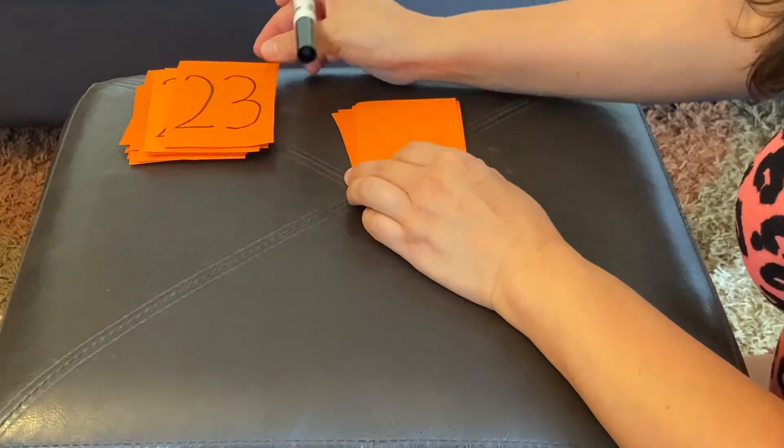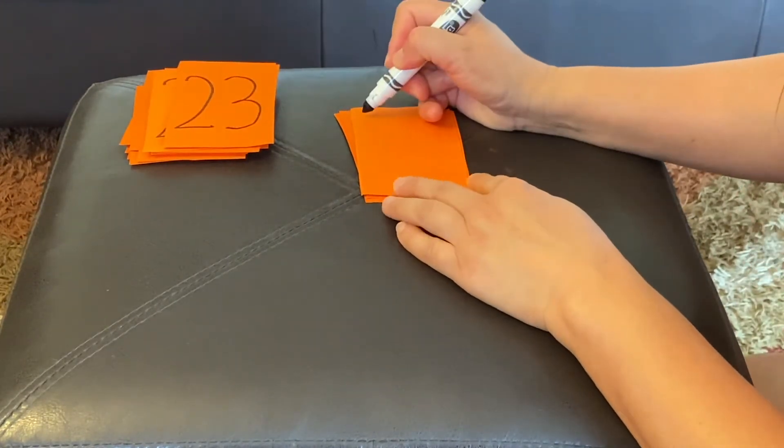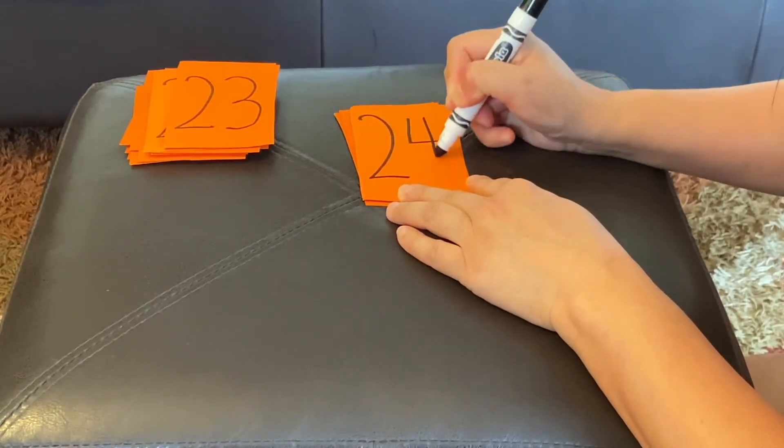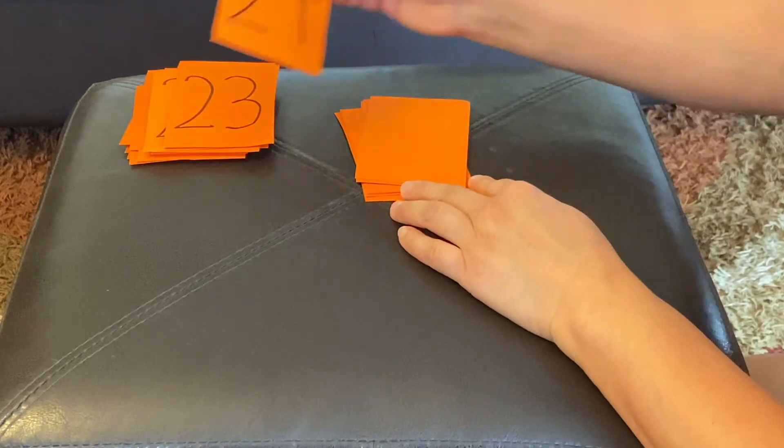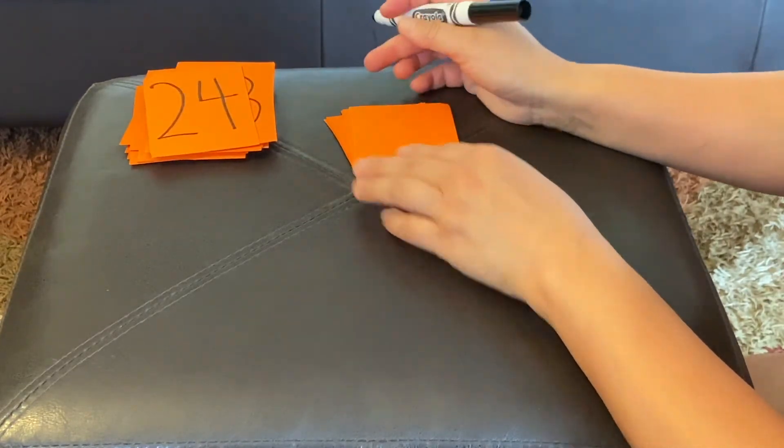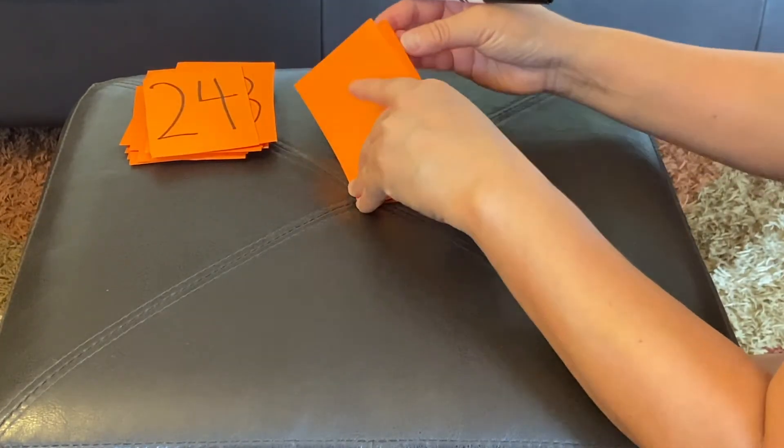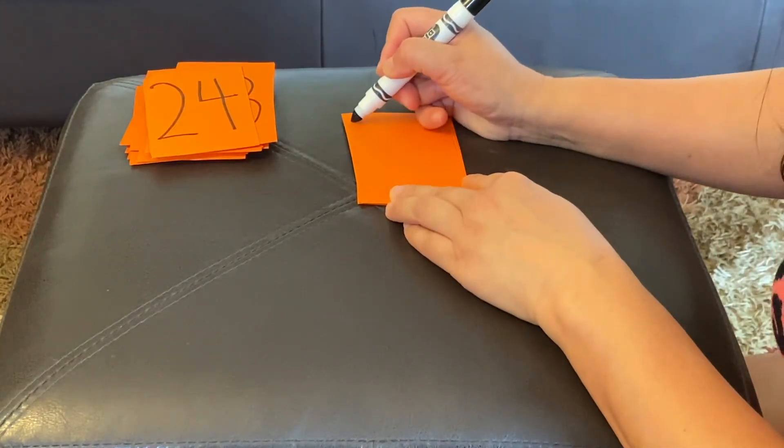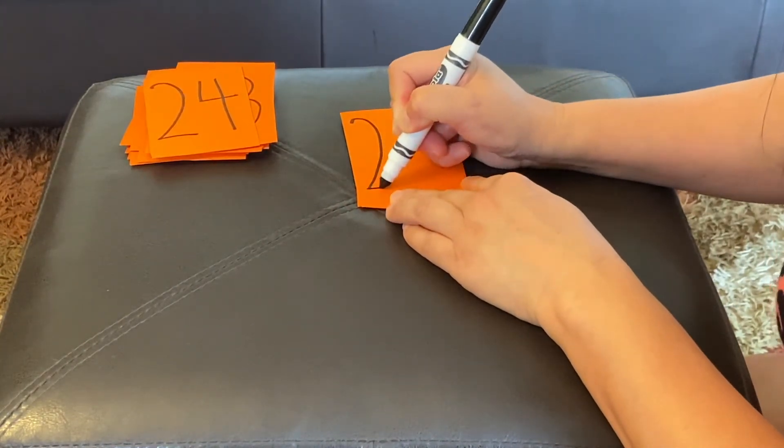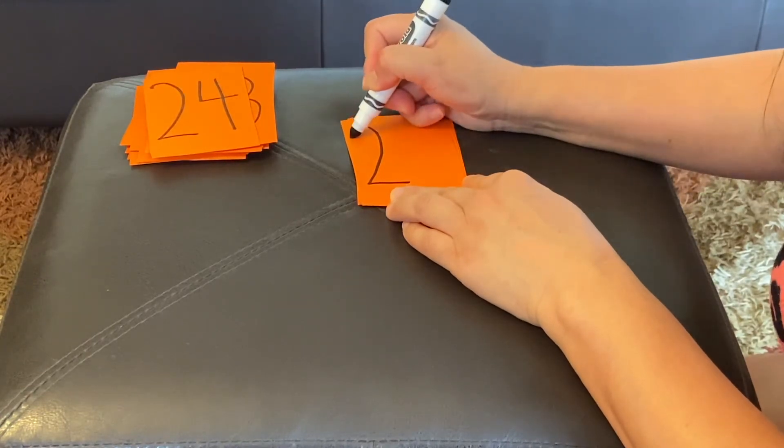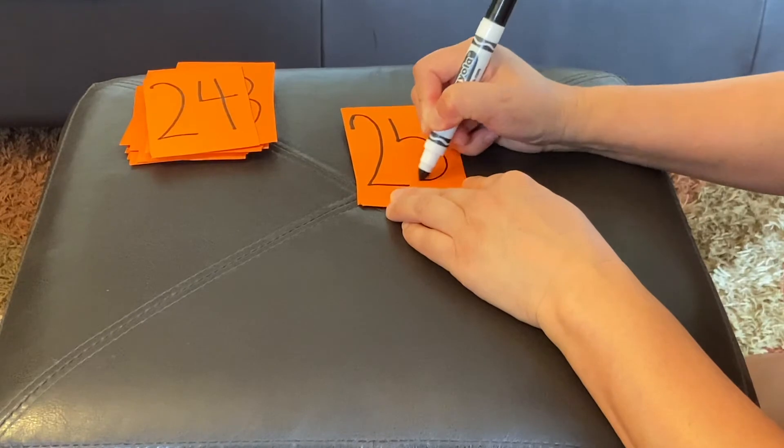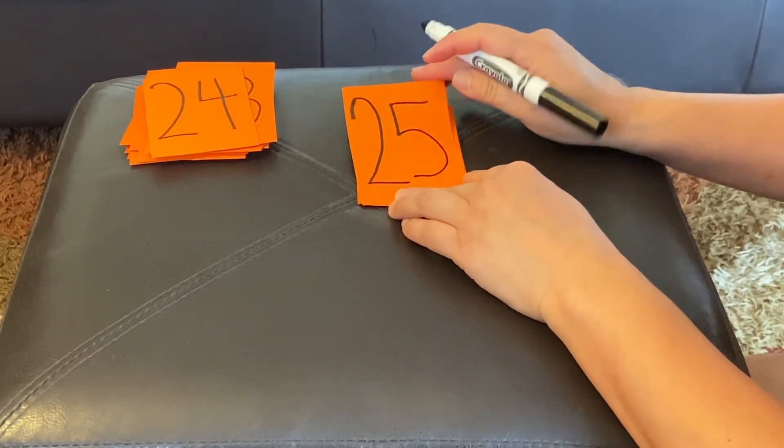Twenty-four would be a two, and a four. Twenty-five would be a two, and a five. Whoa. That's a skinny two I have. Two and a five.